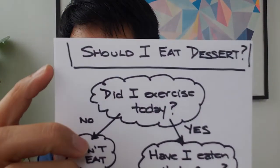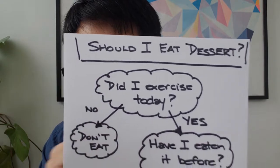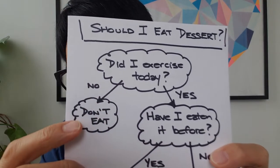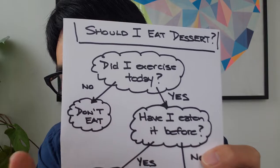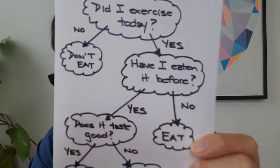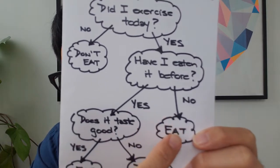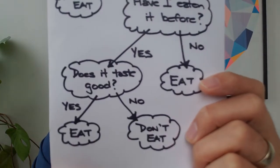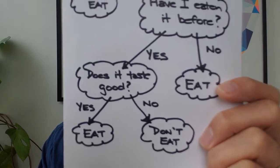Let's go back to the decision tree my students and I created together. The overarching question is: should I eat dessert? We break it down into smaller questions like, did I exercise today? Depending on if you answer yes or no, it leads you to an answer like 'don't eat,' or leads you to another question like, 'have I eaten it before?' And again, the yes or no leads you to either 'eat it,' or to another question: 'does it taste good?' Yes or no then leads you to more decisions or more answers.